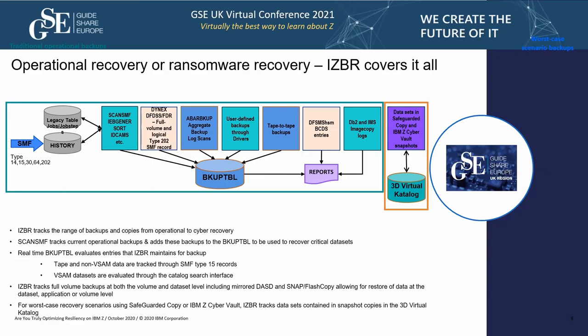It's still important to cover regular resiliency using standard tools such as DFDSS (ADRDSSU), IBGEN, CA Disk, and various HSM functions. We can also report on DB2 and IMS image copy logs as they're being taken, though we don't offer a recovery scenario for those — there are other IBM portfolio tools for that. Safeguarded copies are monitored through our 3D virtual catalog in IZBR.